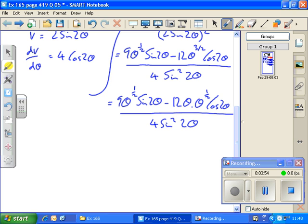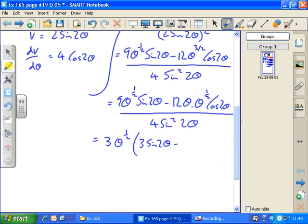I wouldn't probably bother to write that intermediate step, but the reason why I've done that is because we can now see that we can take not only a number that's common to 9 and 12, which is 3, but also theta to the half outside a bracket, leaving 3 sine 2 theta minus 4 theta cos 2 theta all over 4 sine squared 2 theta.